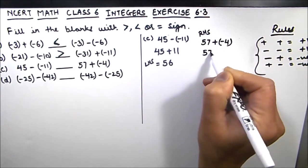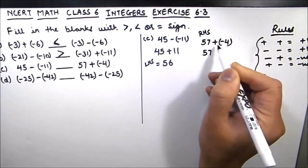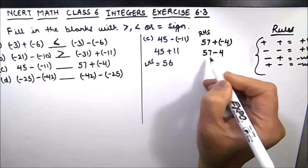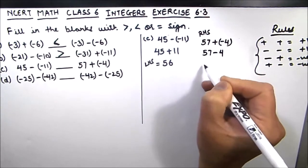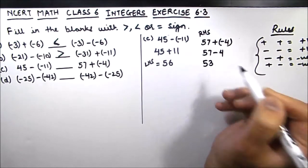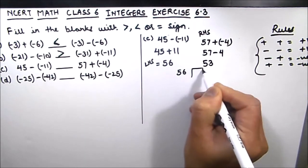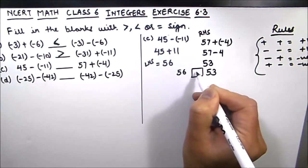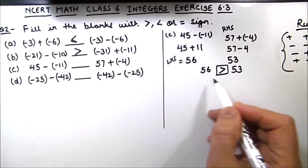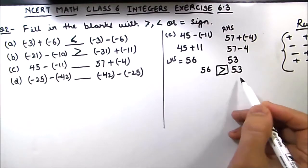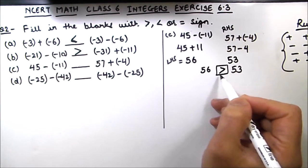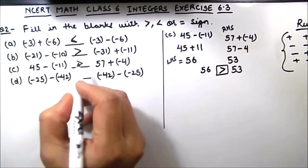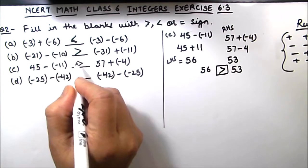For the right hand side, 57 we write as is, and plus and minus makes it minus 4. So 57 - 4 = 53. The two numbers are 56 and 53. Since 53 is less than 56, reading from the left hand side, 56 is greater than 53. So in part C we put a greater than symbol.